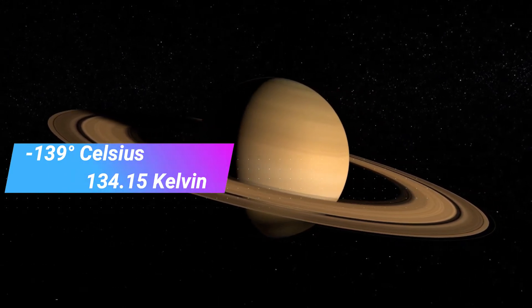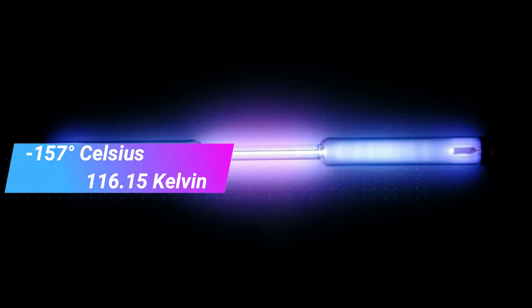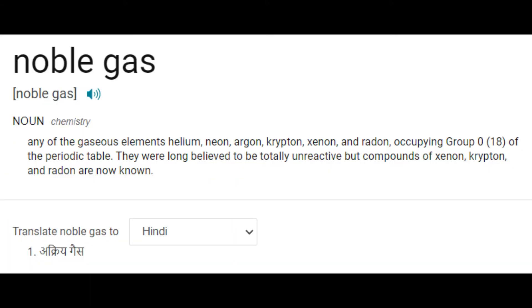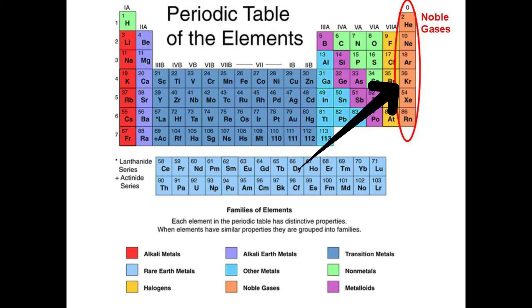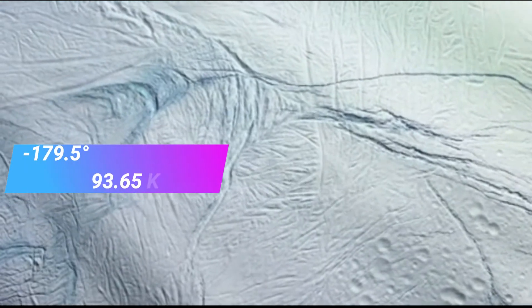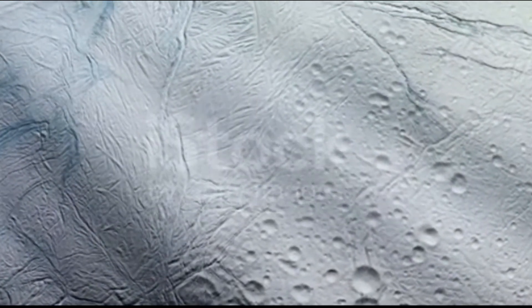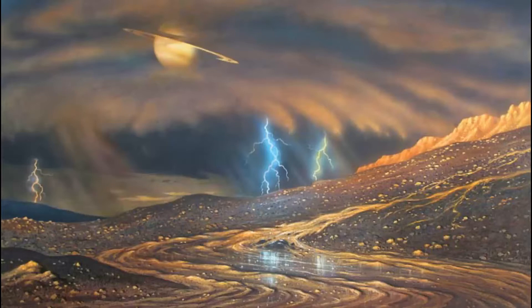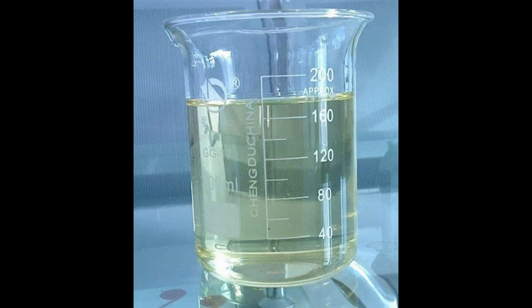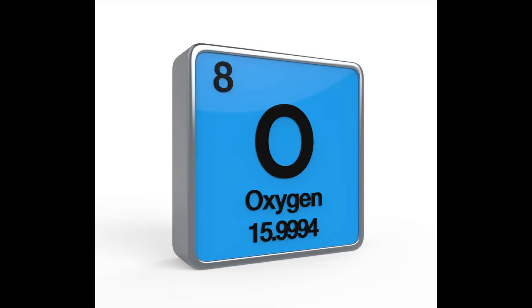The freezing point of the noble gas krypton is minus 157 degrees Celsius or 116.15 Kelvin. Noble gases have no color or smell and do not react much. The average temperature on Titan, the largest moon of Saturn, is minus 179.5 degrees Celsius or 93.65 Kelvin. Because of this extreme cold, Titan doesn't have water rivers or seas — instead it has rivers of methane, which is completely liquid at this temperature.